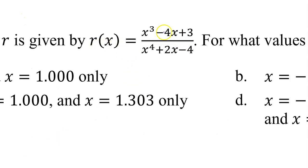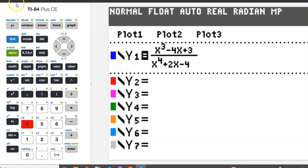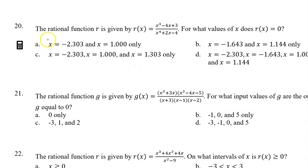Take out your TI-84 for number 20. Copy this function r of x in as y1. The rational function r is given by r of x equals this expression. For what values of x does r of x equal zero? So we are being asked to find the zeros of r that will show up on the graph as x-intercepts.